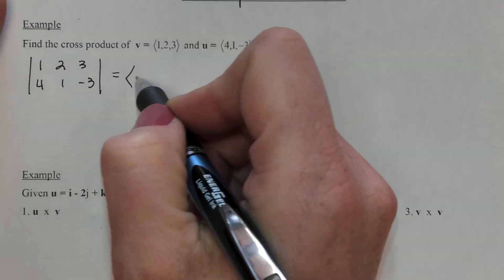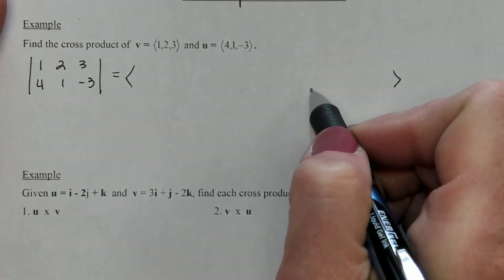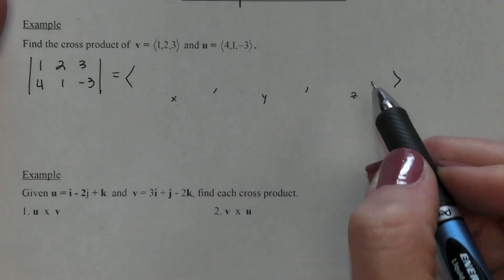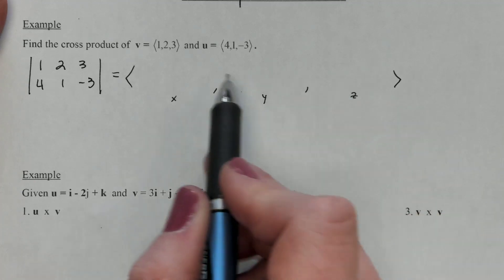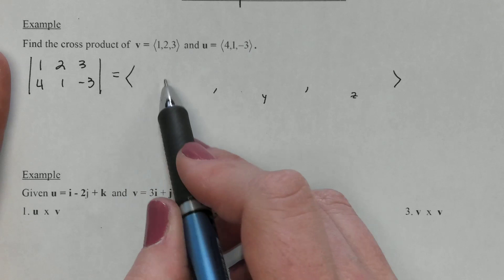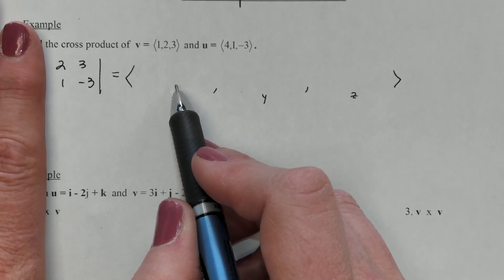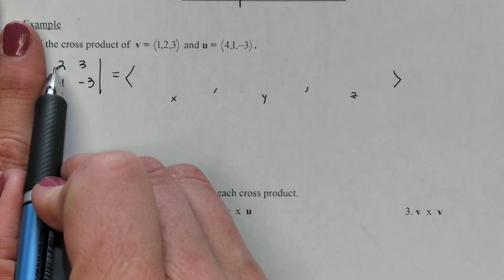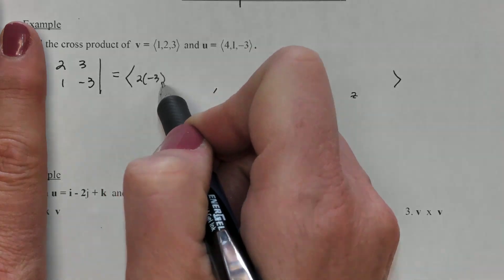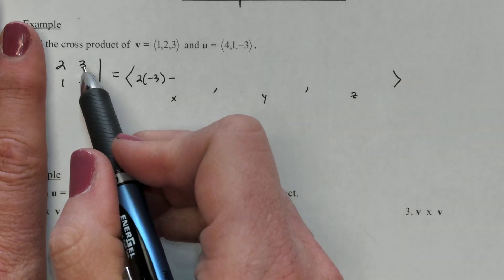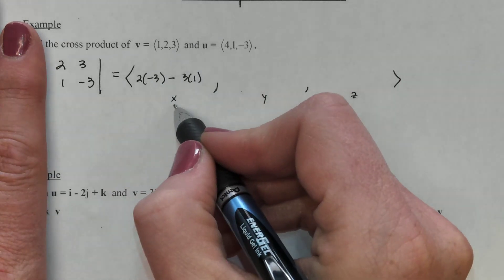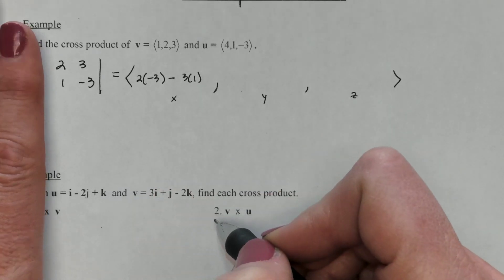In order to find the cross product, remember we are just finding ourselves another vector — another X, Y, and Z — so that when I have these two vectors, the one I'm about to create is going to be orthogonal to both of them at the same time. To find the first component, we're going to cover up the first column of numbers and do multiplication on the diagonal. We start in the upper left and do two times negative three, then subtract the other diagonal: three times one. That gives us our X value of our new vector.